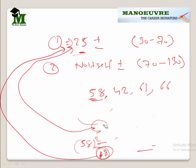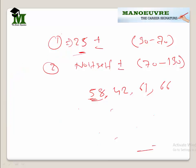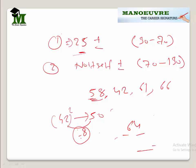Now suppose we need to find the square of 42. It is 8 less from 50. 8 squared is 64. Since it is 8 less, I will subtract from 25 and get 17. So 1764 is my answer. In 1 to 2 seconds you can find out squares, if you know the squares till 1 to 30.